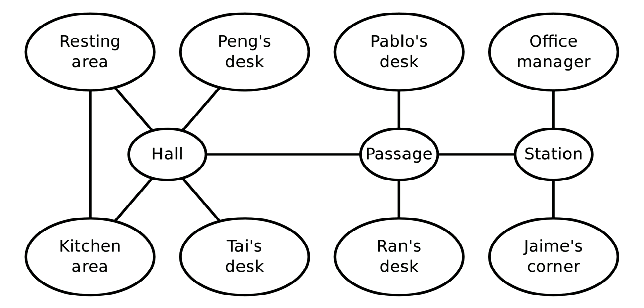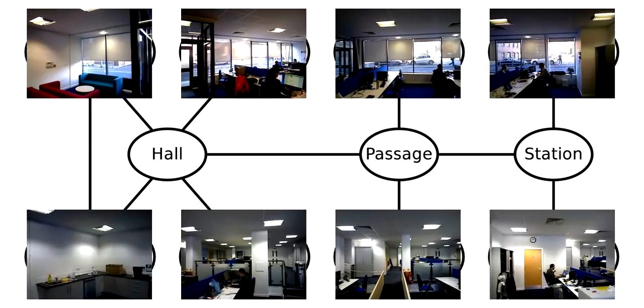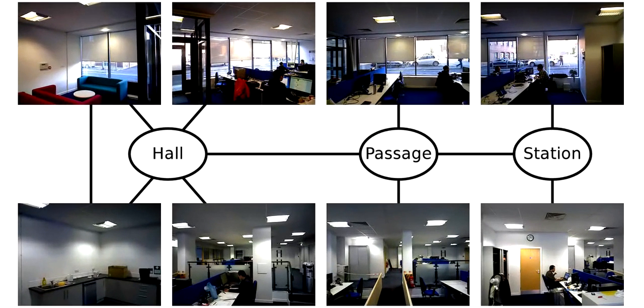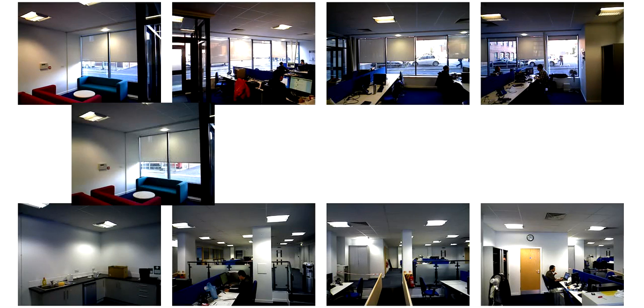Assume that you have a topological map, where each node is associated with a local appearance model. The task is to determine the robot's location based on the map and the robot's sensory input.